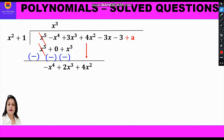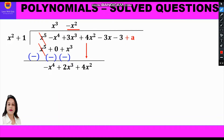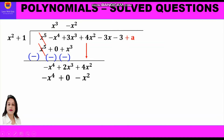Division: divide -x⁴ by x² to get -x² as the new quotient term. Multiplication: -x² × x² = -x⁴, and -x² × 1 = -x², written below the like terms. Subtraction: change signs (all minuses become plus). -x⁴ and +x⁴ cancel; 2x³ - 0 = 2x³; 4x² + x² = 5x². We bring down -3x.